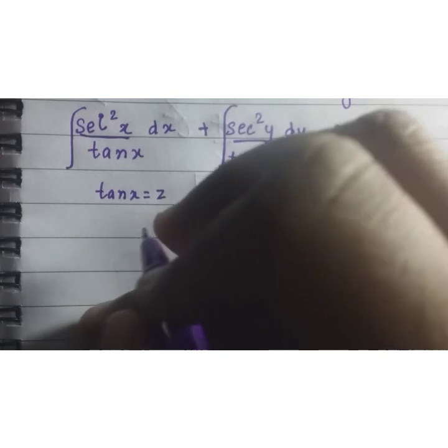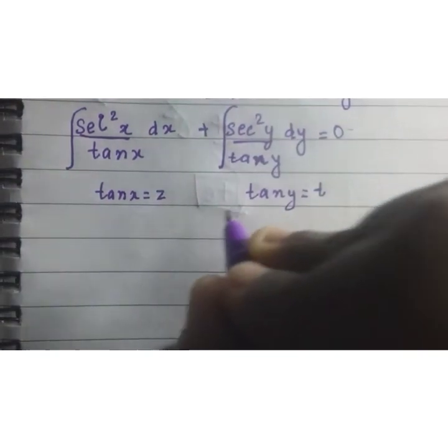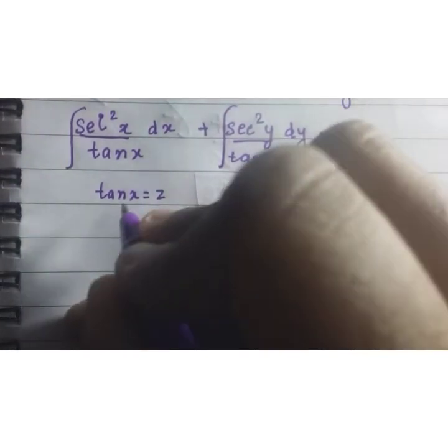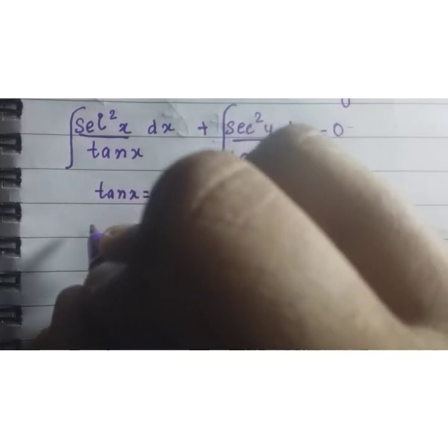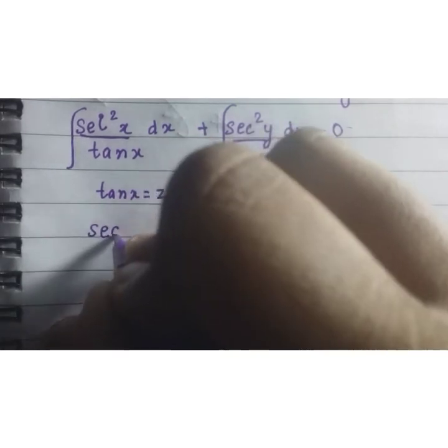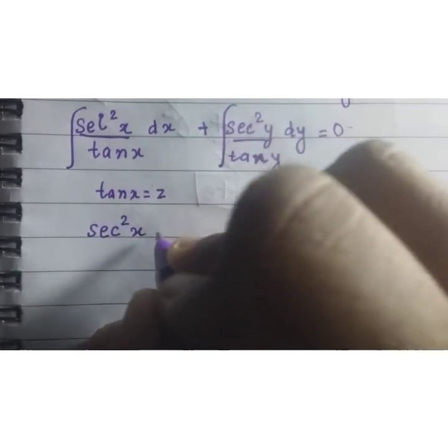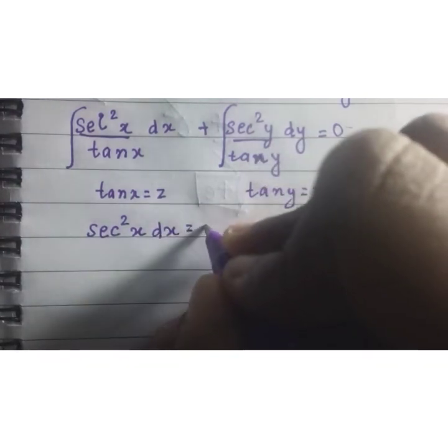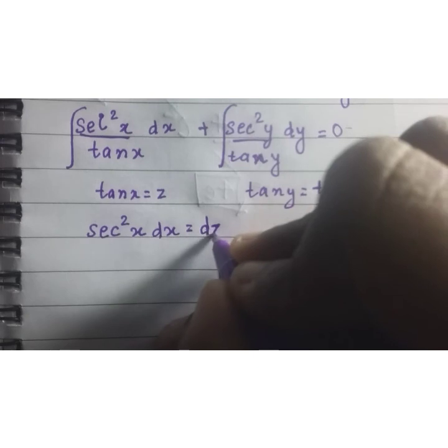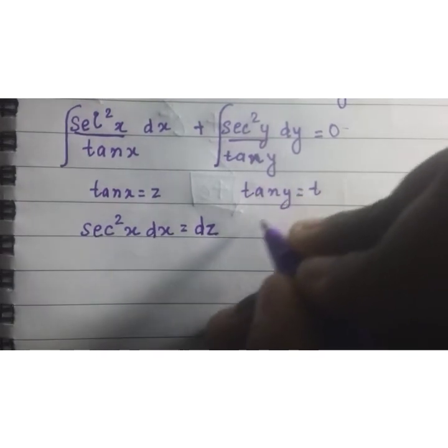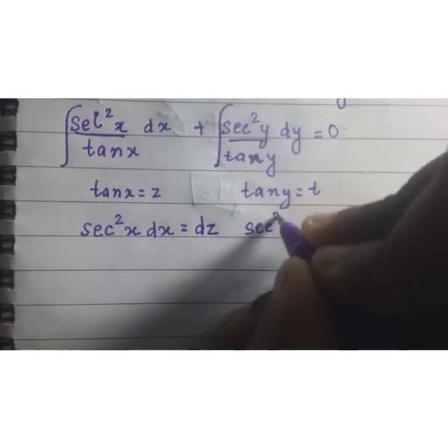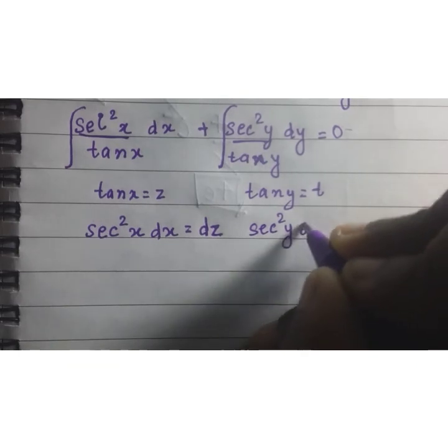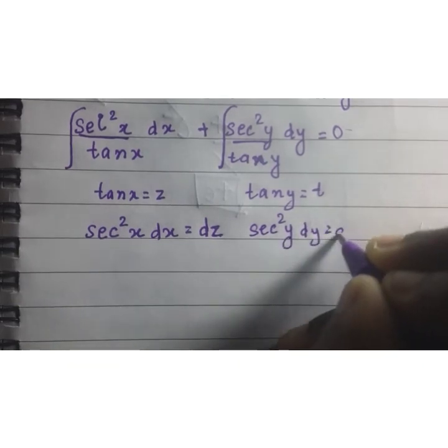On differentiating this, we are applying the substitution method here. So, on differentiating, what do we get? Sec²(x)dx is equal to dz and here sec²(y)dy is equal to dt.